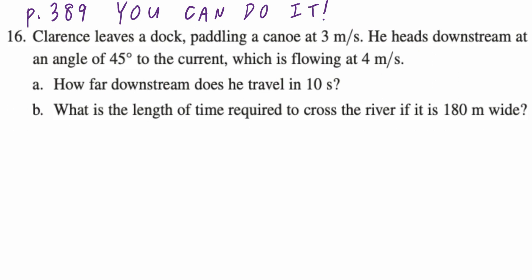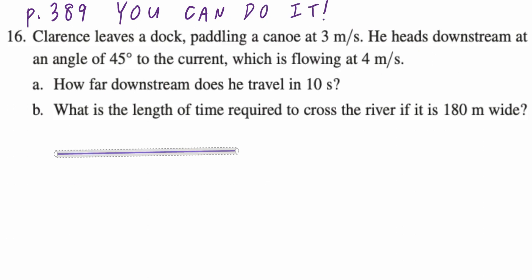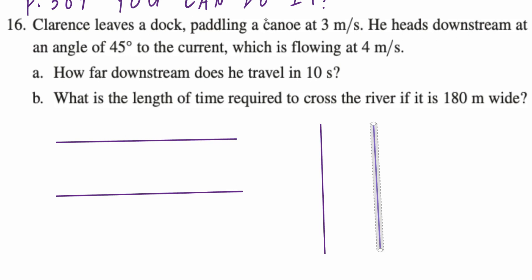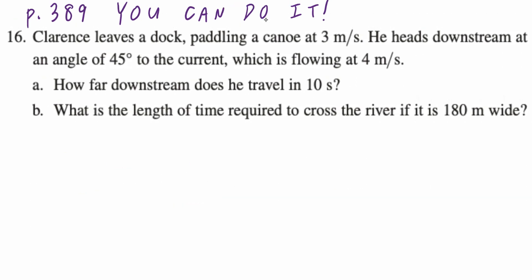Before we start, there are a couple of things you want to think about. When you draw a diagram, sometimes it may look one way or another — it really depends on the context. For example, if the question says you're going left or right, you're thinking about the first diagram, because the current could be flowing either west or east. In the second case, if there's upstream and downstream, this is how you set it up. So let's reread Part A and draw the appropriate diagram.